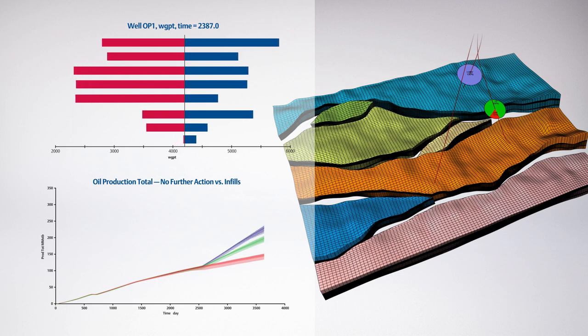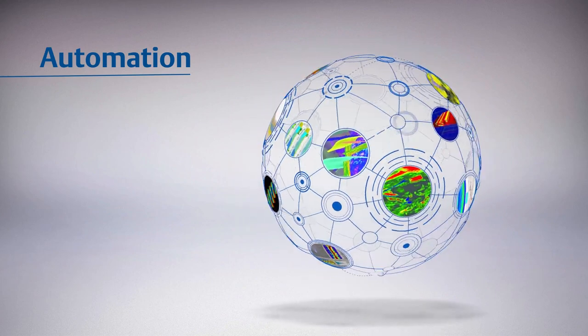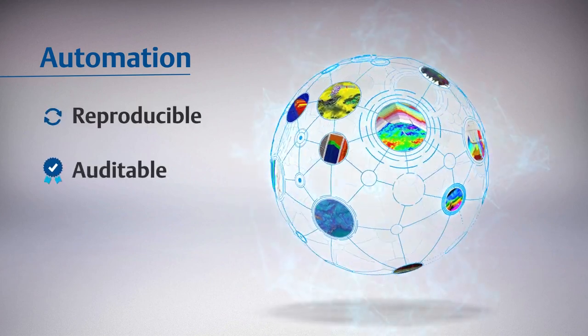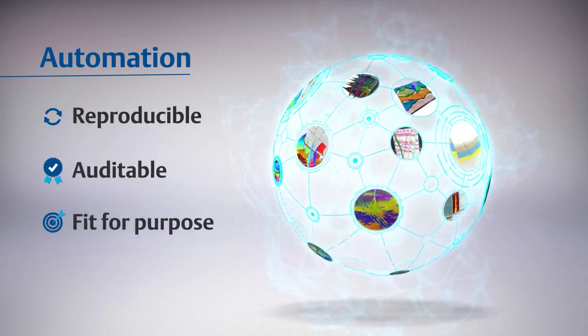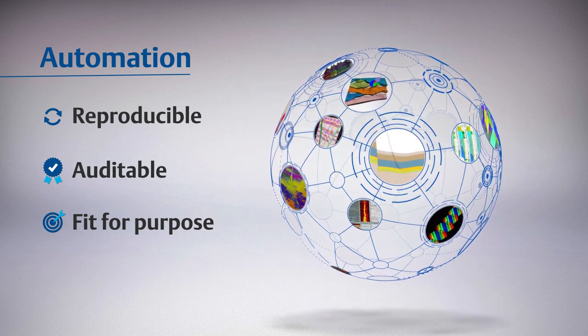With big loop, updates are always realistic and aligned with the underlying geology, including during history matching. Big loop focuses on automation. Reproducible, auditable, and instantly generated workflows customized to your needs are at the heart of the big loop ecosystem.